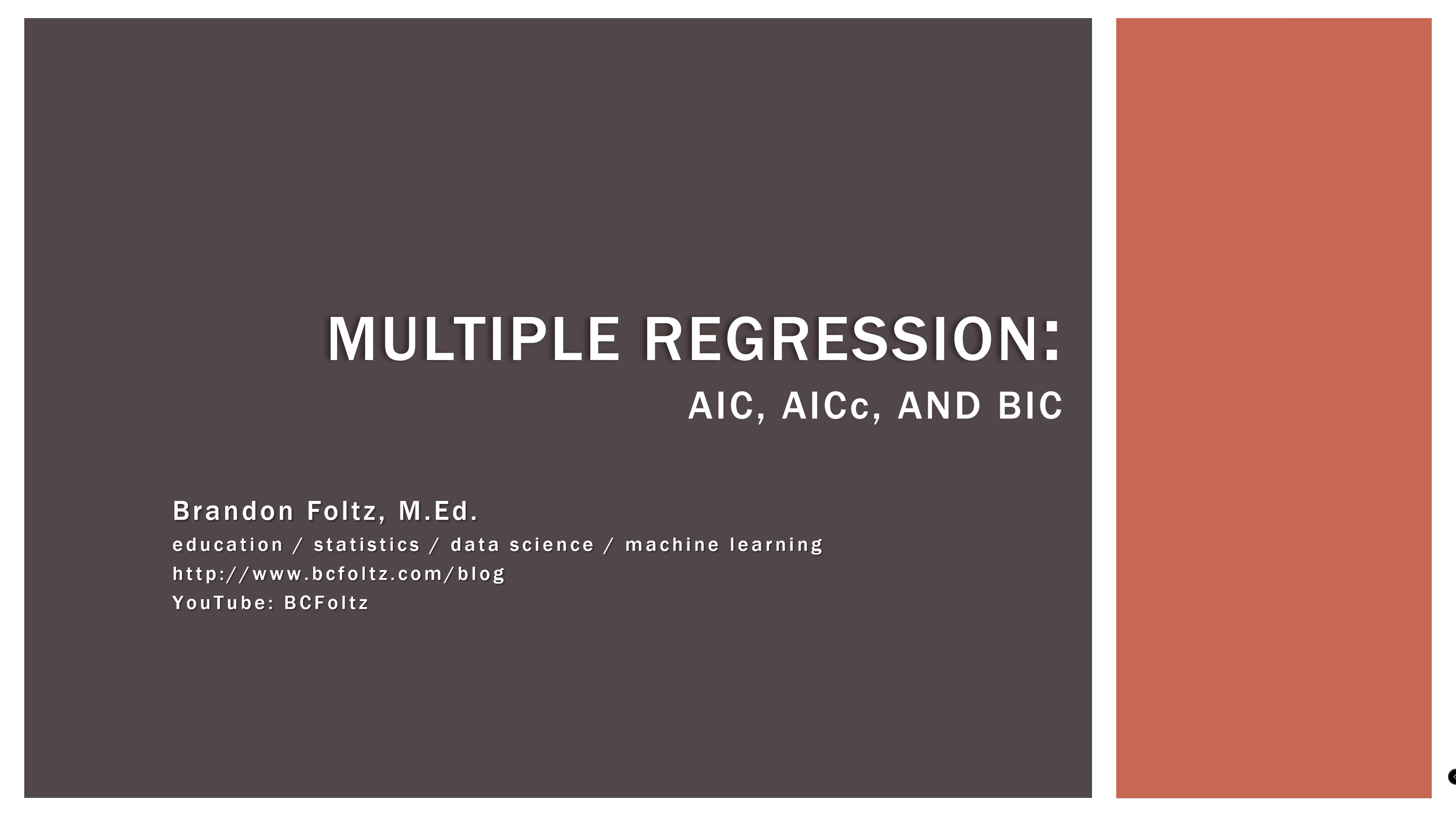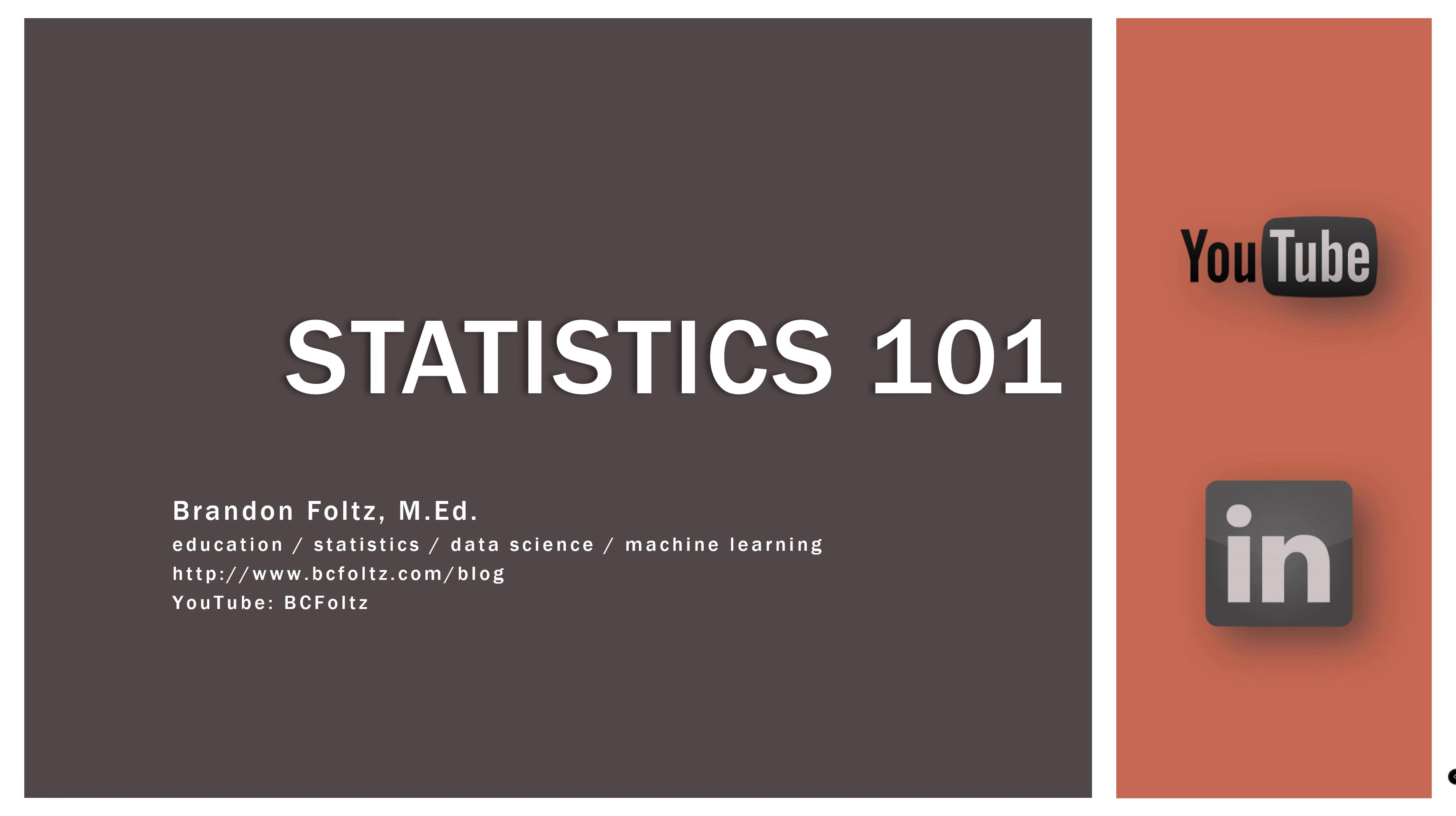All right, that wraps up this video on the AIC, the AICC, and the BIC. Again, just a high level overview of what they are, how we use and interpret them, and then how we can kind of calculate them by hand. So I hope this helps you choose the best model in your best subsets regression. So thank you very much for watching. I wish you all the best in your work and in your studies. And I look forward to seeing you again next time. Take care and bye-bye.